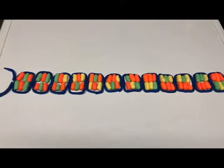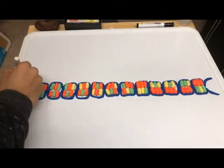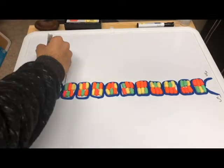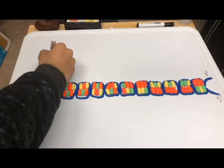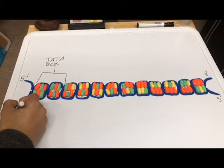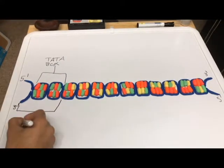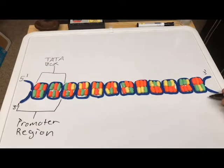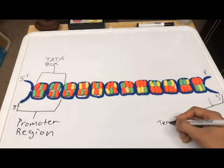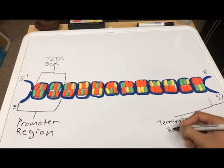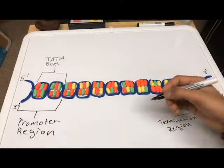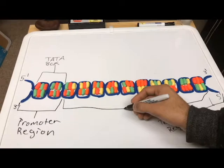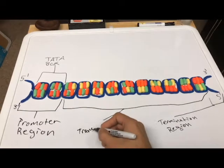The complete set of genetic instructions is called a genome. Nucleotides are like chains and are composed of three parts: a phosphate group, a nitrogen base, and deoxyribose sugar.